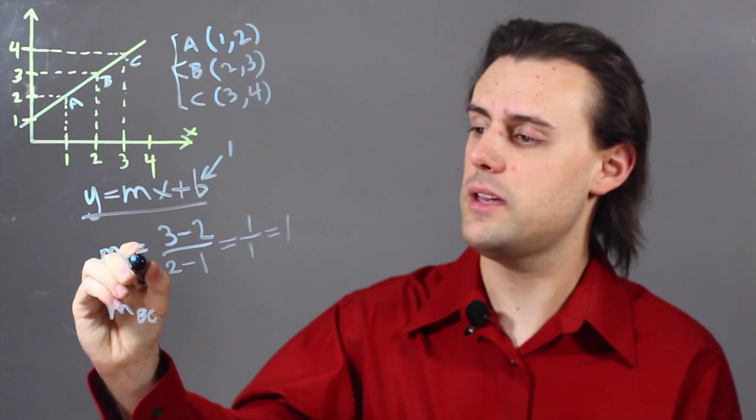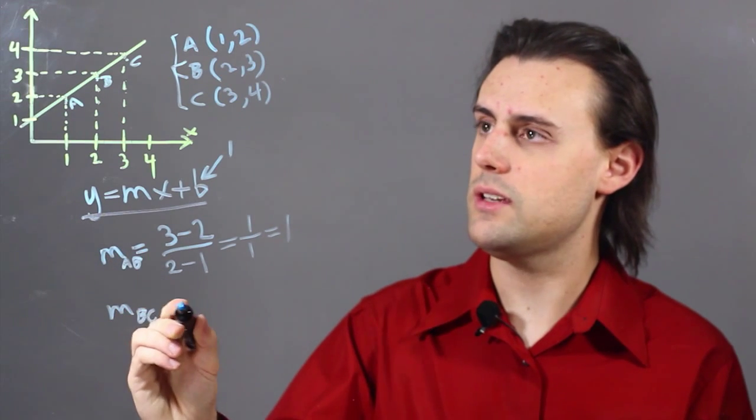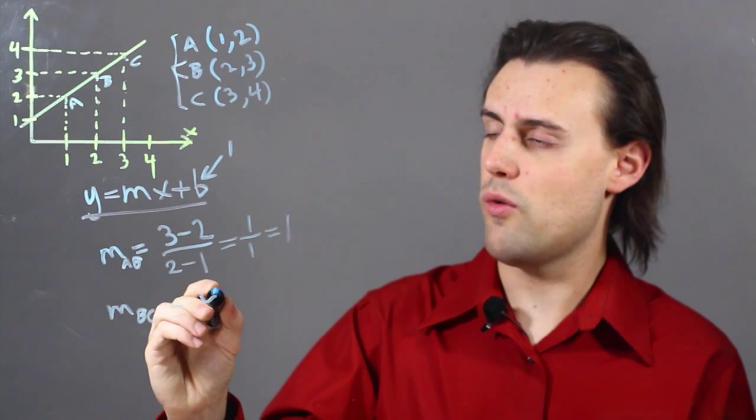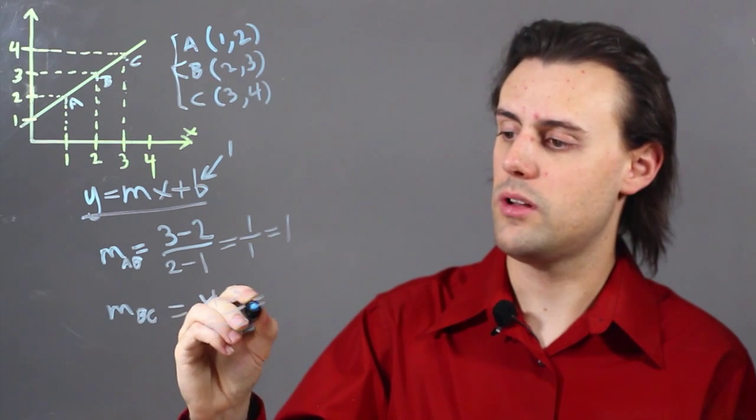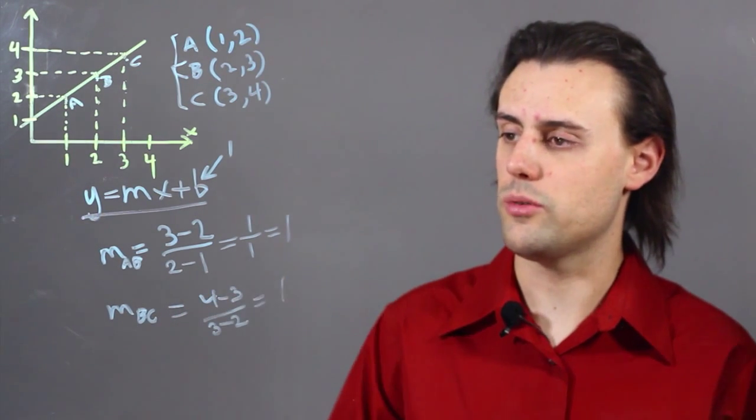So this is m_AB, and m_BC is equal to 4 minus 3, divided by 3 minus 2, which, again, is also equal to 1.